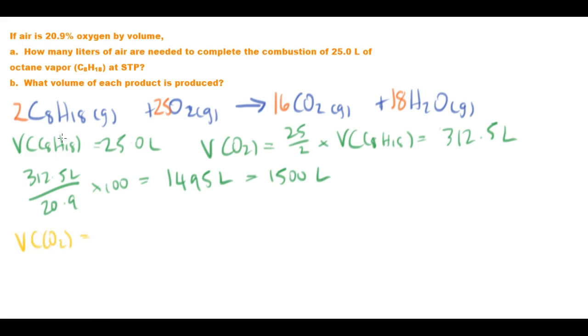So if we want to know the volume of our carbon dioxide, the ratios are going to be the same. So it's going to be 16 over 2 times the volume of octane, which is 25 liters. And that is going to be 200 liters. And the volume of our water vapor is going to be 18 divided by 2, or 9 times 25 liters, which is going to be 225 liters of water vapor. And here we go, problem solved.